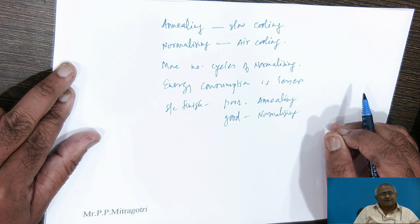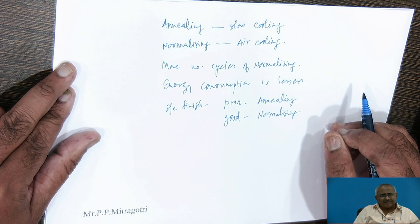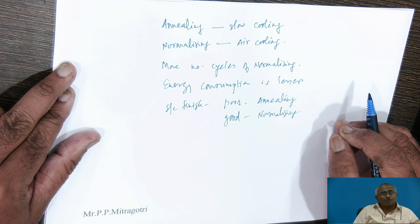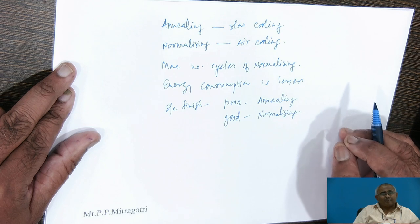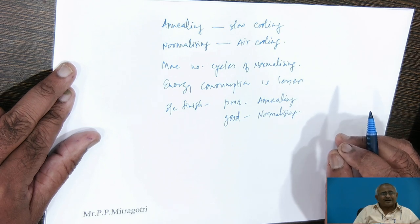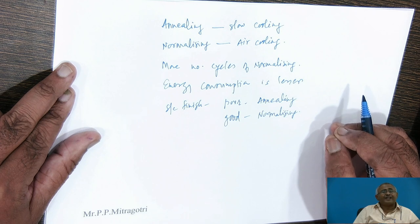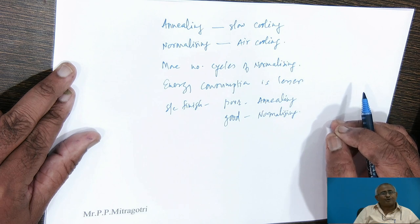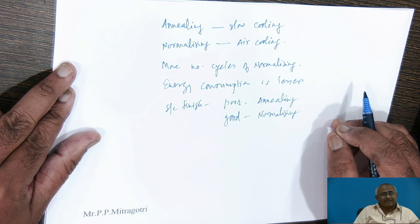Normalizing does refine the grain size and that refinement is acceptable for most purposes. But for critical applications where significant refinement in grain size is required, one has to go for annealing. For normal purposes, normalizing is sufficient to refine the grain size and we can achieve economy.